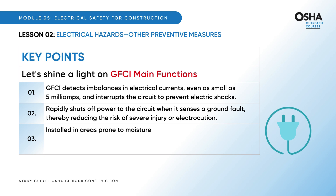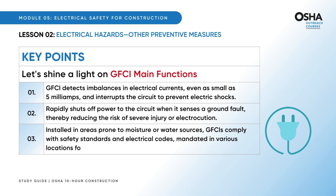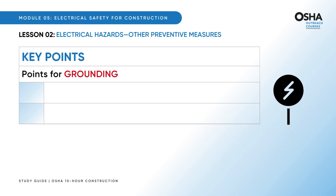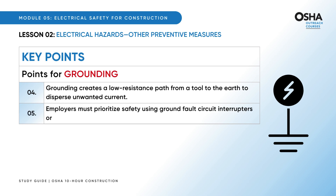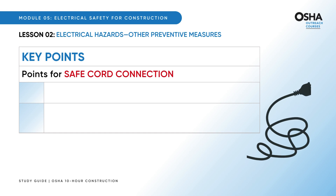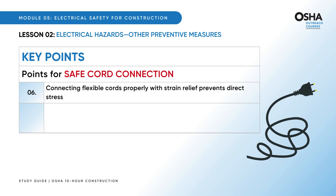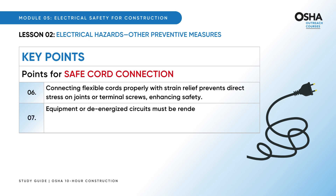GFCIs are installed in areas prone to moisture or water sources and comply with safety standards and electrical codes mandated in various locations. Grounding creates a low-resistance path from a tool to the earth to disperse unwanted current. Employers must prioritize safety using ground fault circuit interrupters or assured equipment grounding conductors at construction sites. Safe cord connection — connecting flexible cords properly with strain relief — prevents direct stress on joints or terminal screws. Equipment or de-energized circuits must be rendered inoperative and have tags attached at all points where they could be energized.